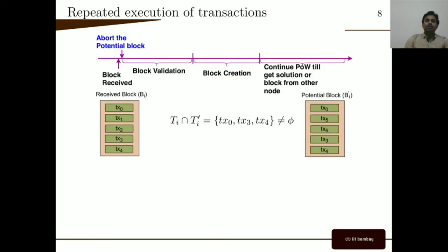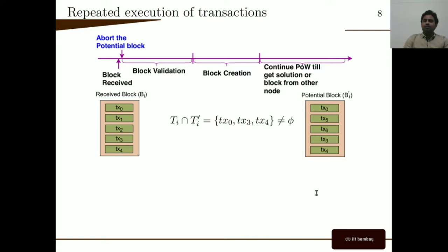The observation which motivates us to design Renoyer is that we observe nodes discard the execution results of the block creation phase completely while validating the received block. A node executes all transactions included in the received block, even though it might have executed the same transactions as part of block creation. For example, in this diagram we can see that the intersection of transactions in the received block BI and the potential block B-I is not empty — it contains TX0, TX3, and TX4. But while validating the received block, it will execute all transactions. So the question is: can we use the results of the block creation phase to validate the block, instead of completely discarding them?